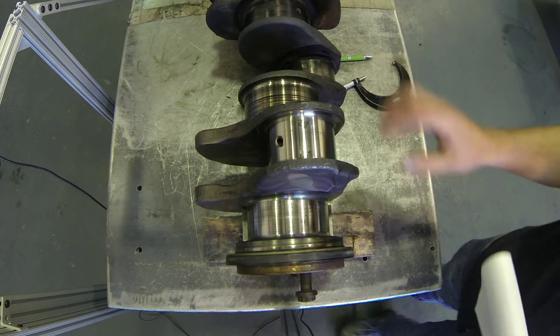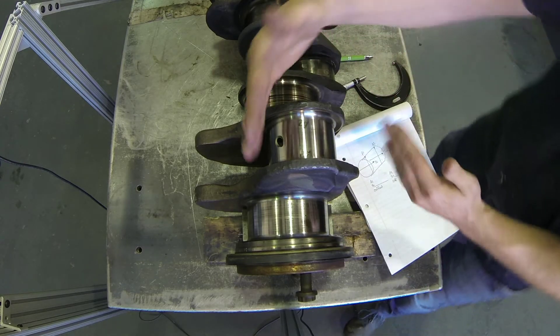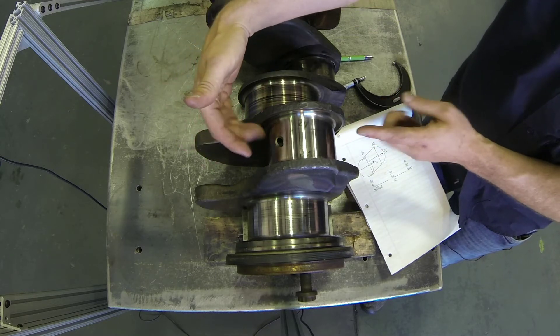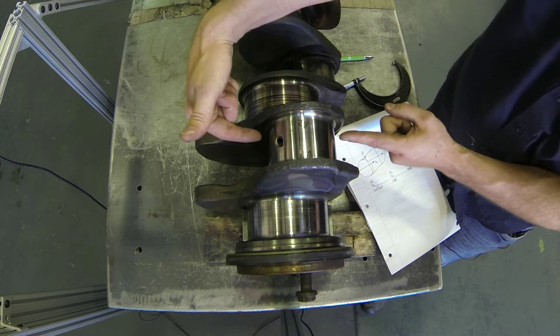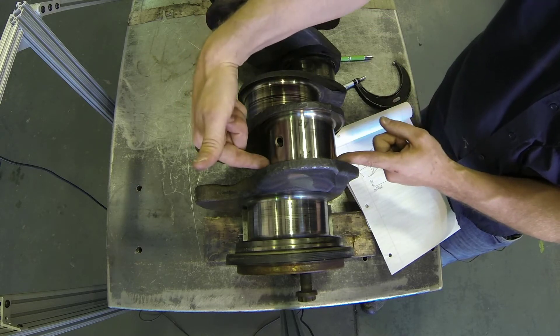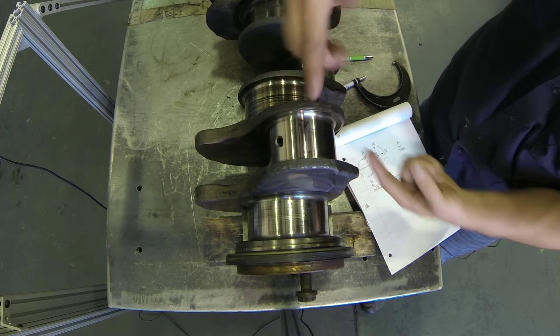All right, let's check our crankshaft journal for taper. When we look at taper, what we're actually looking for is whether wear has occurred—whether the crankshaft journal, the connecting rod journal, is narrower on this side than it is on this side, or narrower vertically here than it is here.